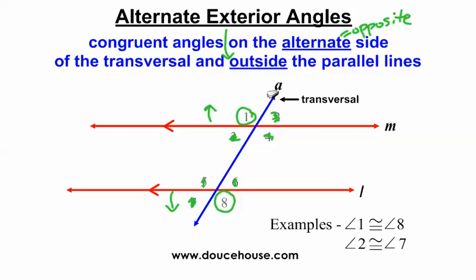Just like alternate interior angles, alternate exterior angles come in pairs of two. Angle two is an alternate exterior angle to angle seven - they're both outside the parallel lines, on opposite sides of the transversal, and congruent to each other. So alternate exterior angles come in pairs of two as well.